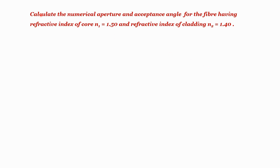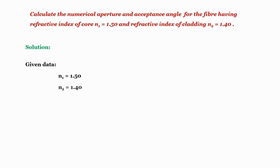Let's take one example to see how the calculations for acceptance angle and numerical aperture are done. The problem statement is: calculate the numerical aperture and acceptance angle for a fiber having refractive index of core n1 = 1.50 and refractive index of cladding n2 = 1.40. Given data: n1 = 1.50, n2 = 1.40; we need to calculate θa and NA.